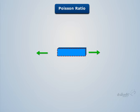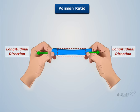When we pull this strip in a longitudinal direction, the strip elongates in a longitudinal direction and contracts in a lateral direction.